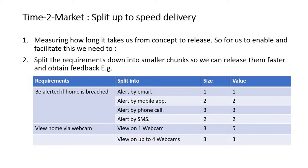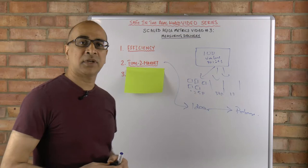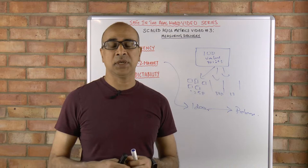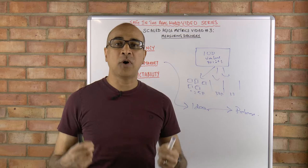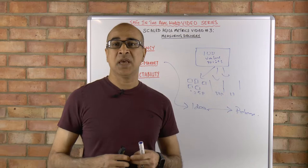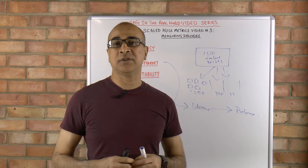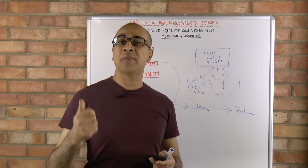We've split that up into smaller chunks and also split up the value, so we can release smaller chunks of value more regularly to the market, obtaining greater feedback as well. Now let's move on to our delivery predictability, which is our third measure. How can we enhance and improve our ability to predict with some level of certainty what we are able to release to the market? That's so important - whether we've got deadlines to meet for trade fairs, marketing campaigns, or other commitments.